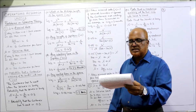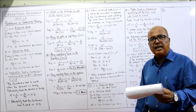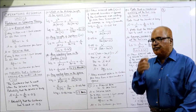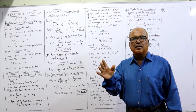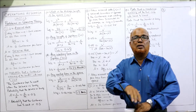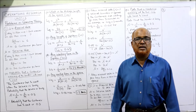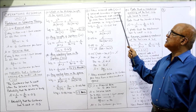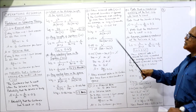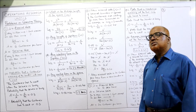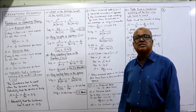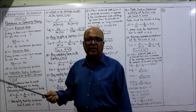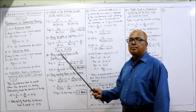Last part F: what should be the arrival rate such that a second counter will be opened? The manager is convinced that if customers are waiting more than 3 minutes on average, a second counter should be opened. So we need to find the new arrival rate lambda such that the average waiting time in the queue WQ equals 3 minutes.